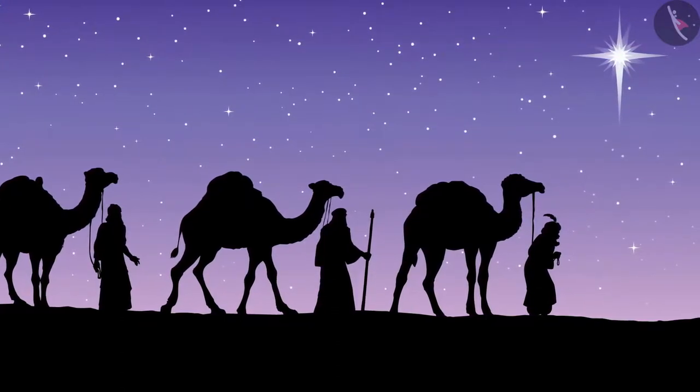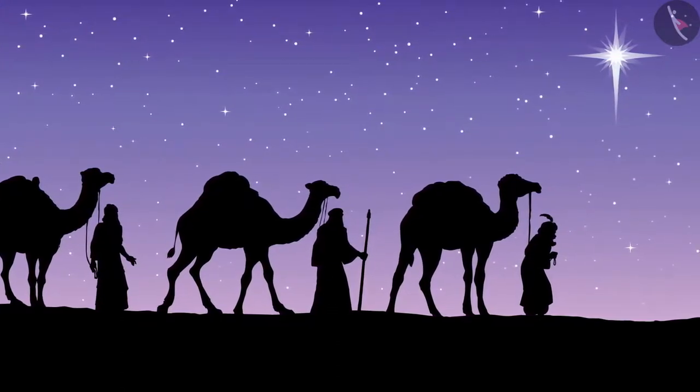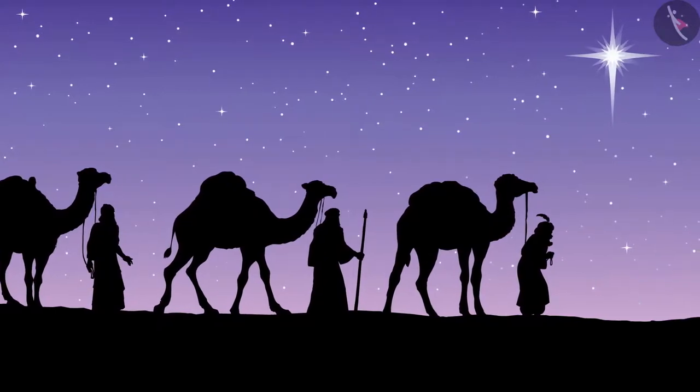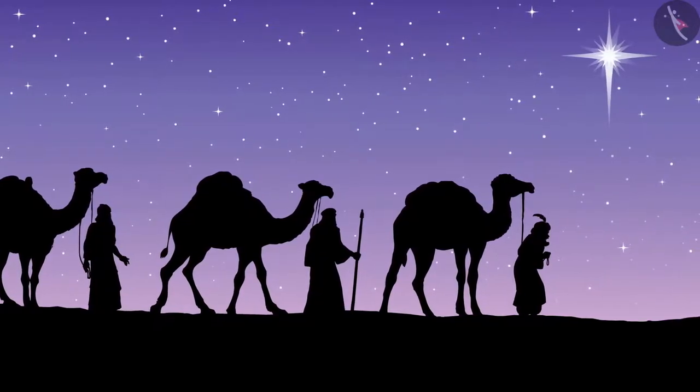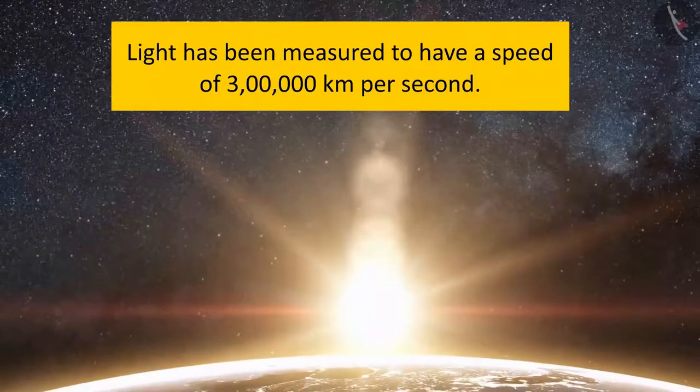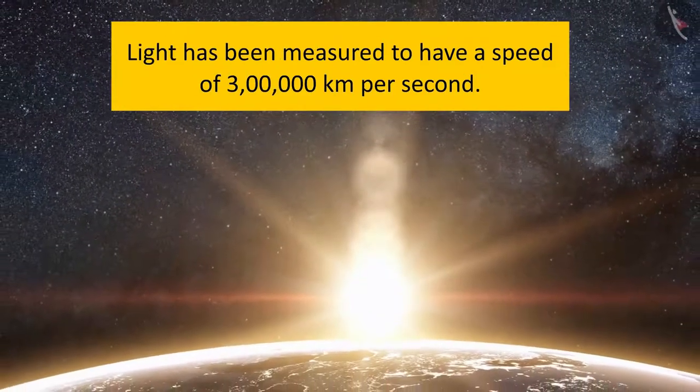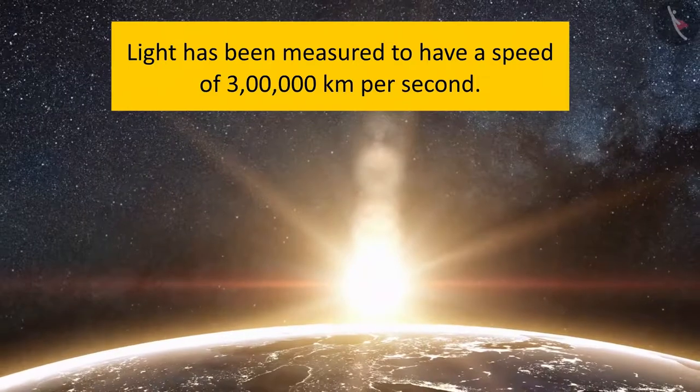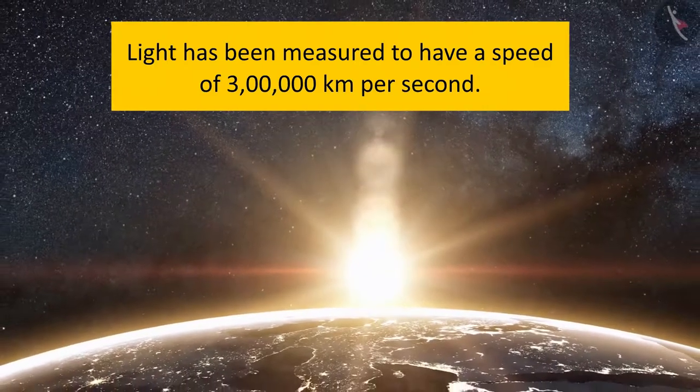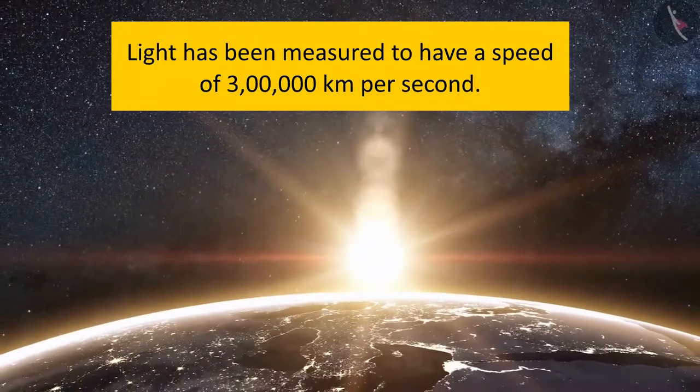The amount of time calculated to reach from one place to other is said in terms of light years. Light has been measured to have a speed of 3 lakh km per second and is said to take 8.3 minutes to reach the Earth from Sun.